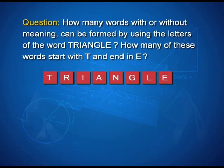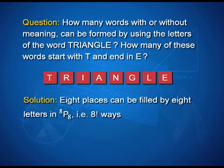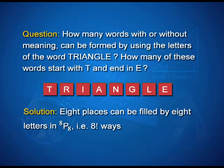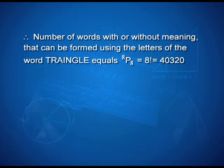Another interesting problem: How many words with or without meaning can be formed by using the letters of the word TRIANGLE? The word TRIANGLE has 8 letters, all distinct. These 8 letters have to be permutated — the arrangement of 8 letters in 8 places. The total number of such arrangements is 8P8 = 8! / 0!. Since 0! is defined as 1, 8P8 = 8! = 40,320.